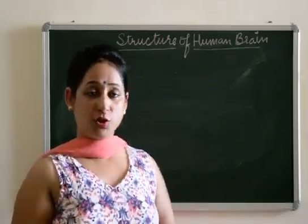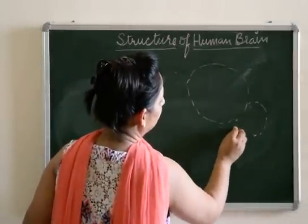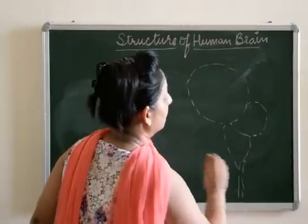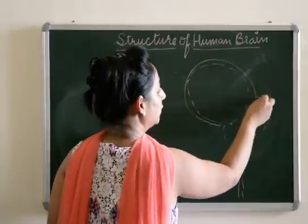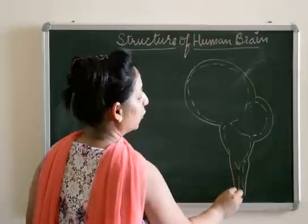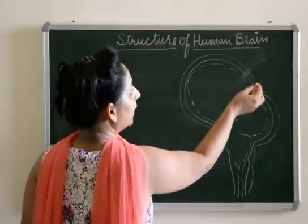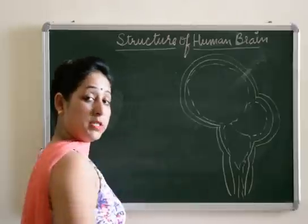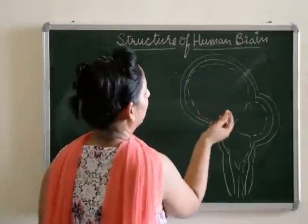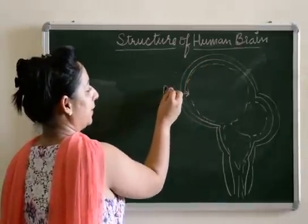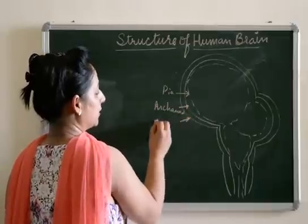There are three meninges. I will draw a diagram. When we see the structure of the brain, the brain has three protective coverings over it known as meninges. They are three in number. The sequence of these meninges is: the outermost is known as the dura mater, then the arachnoid, and then the pia mater. The innermost is the pia mater, the middle one is the arachnoid, and the outermost is the dura mater.